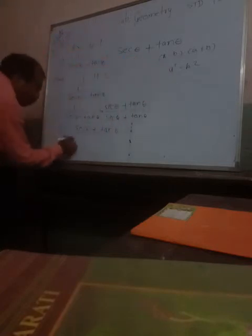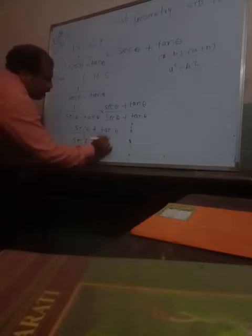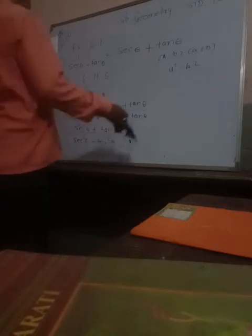Now see here: A minus B times A plus B gives A squared minus B squared. So the denominator becomes sec squared theta minus tan squared theta. We can use this formula here. That is why we write sec squared theta minus tan squared theta in the denominator.